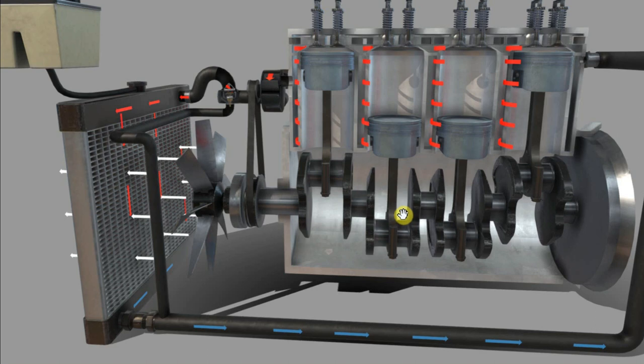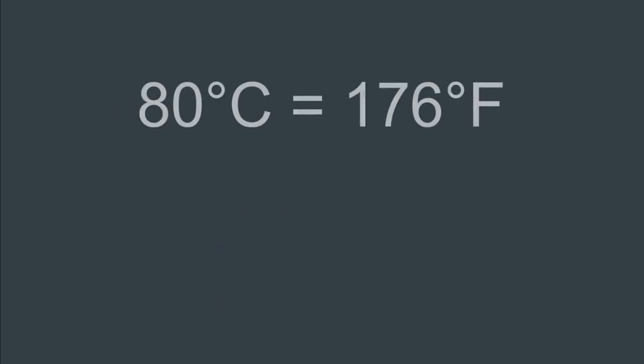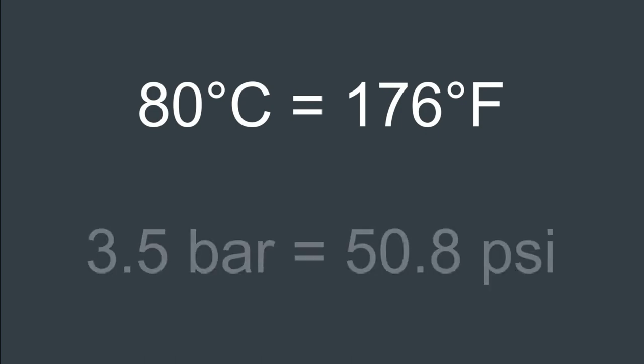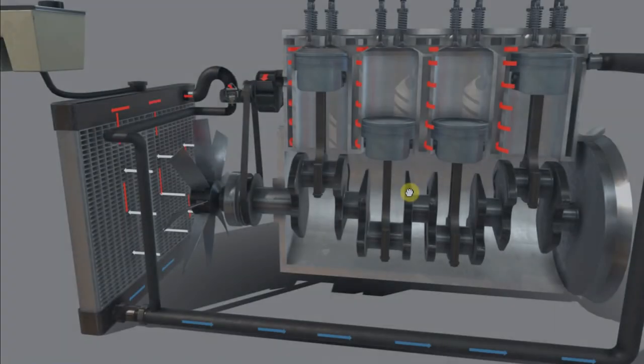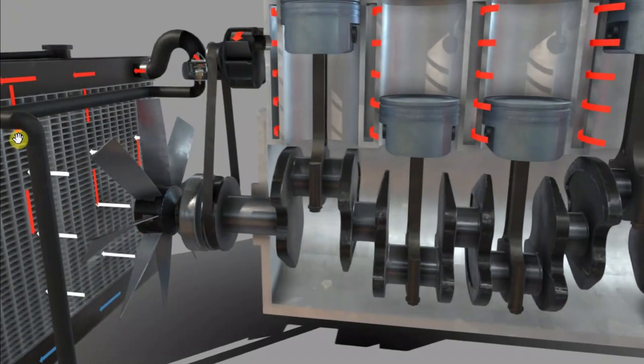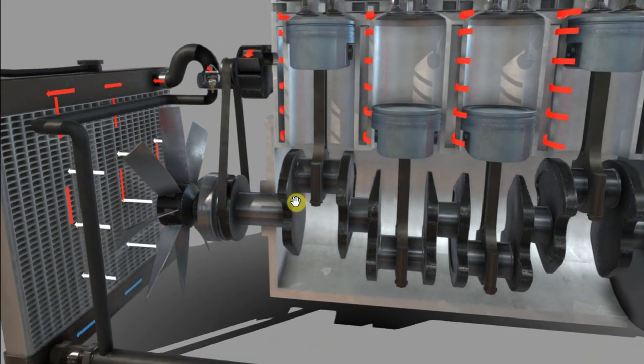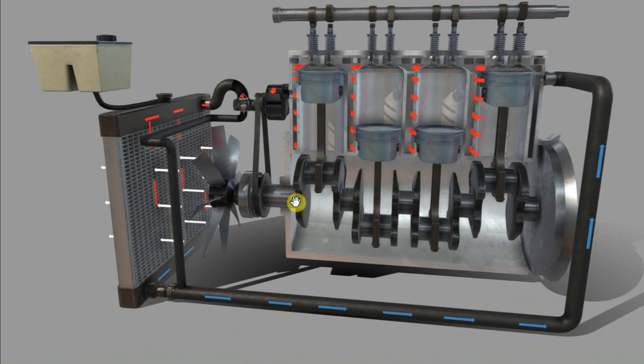A jacket water system will usually be around 80 degrees Celsius and approximately 3.5 bar of pressure. But that's essentially how the cooling water system works. When it's cold, we bypass the radiator, and when it's hot, we cool the cooling water down to a specific temperature in order that we can maintain the temperature in the engine at the optimum temperature.